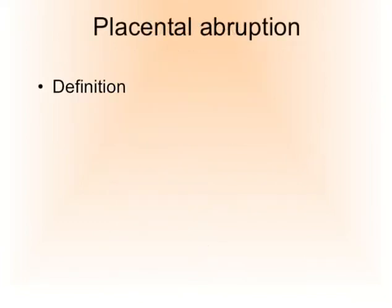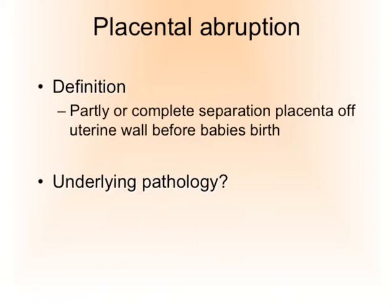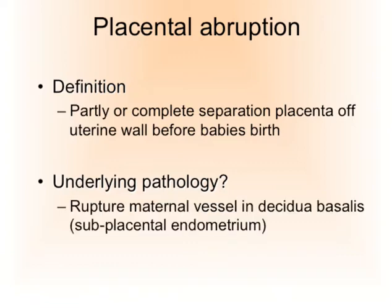Placental abruption by definition is when the placenta is partly or completely separated from the uterine wall before the baby is born. After the baby is born, that is completely appropriate and desired, but not before. The underlying pathology is that the abruption commences with the rupture of one of the maternal vessels in the decidua basalis — so maternal vessels, not fetal vessels.